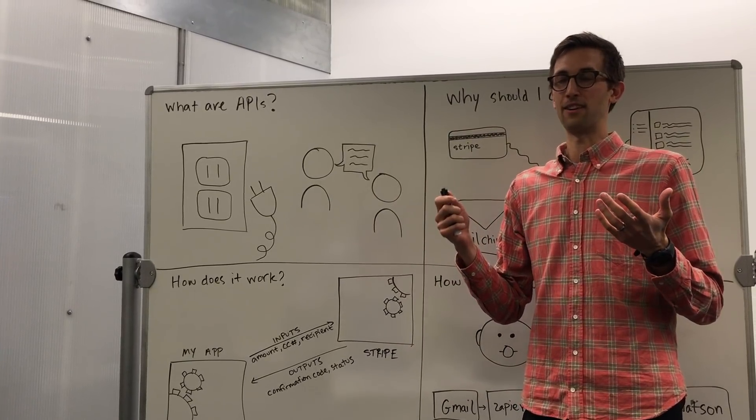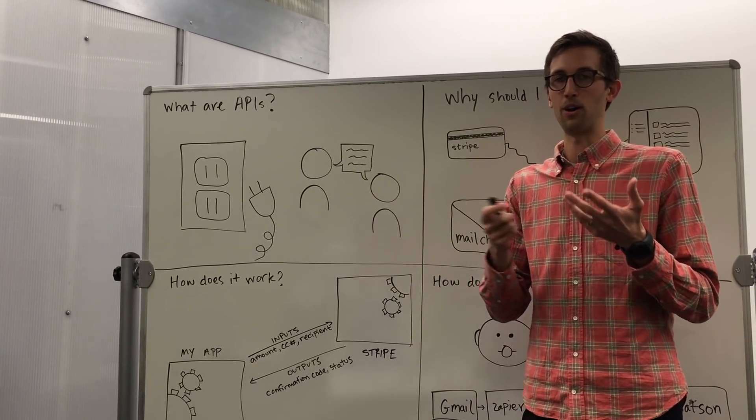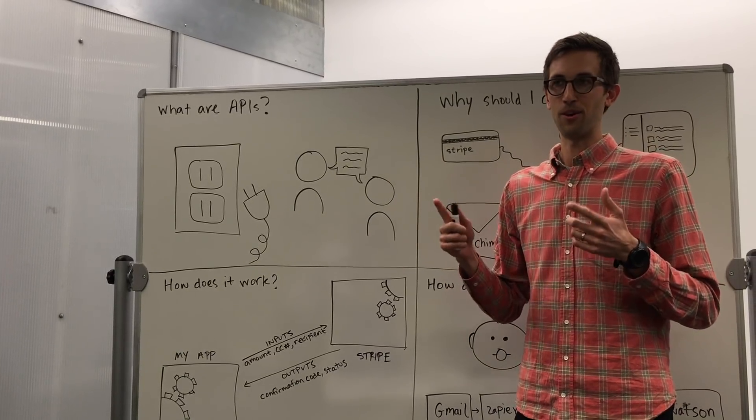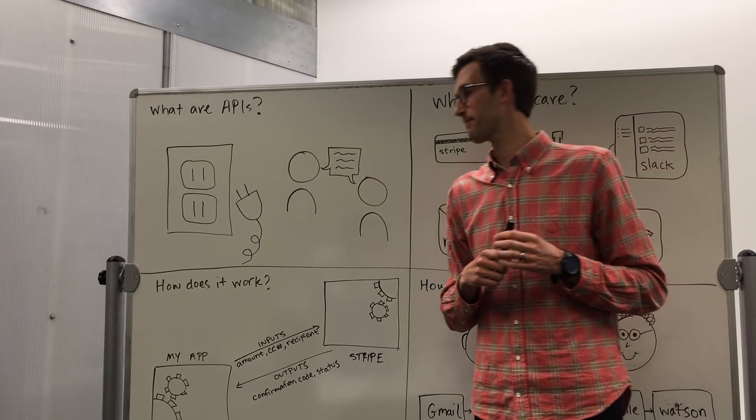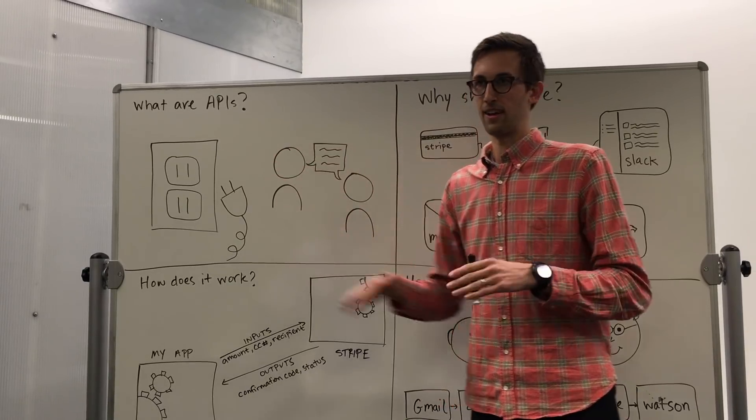Another one is human language. So rather than having to figure out some agreed upon way to talk to one another, you've got languages. You pick one, you learn it, and you talk to other people. APIs are no different. It's just an interface.